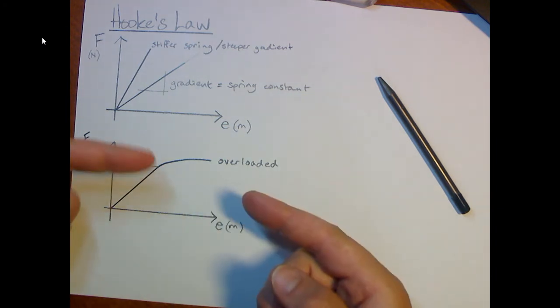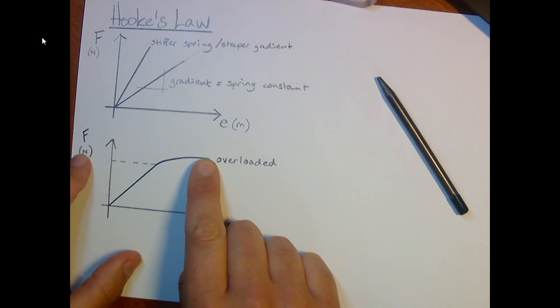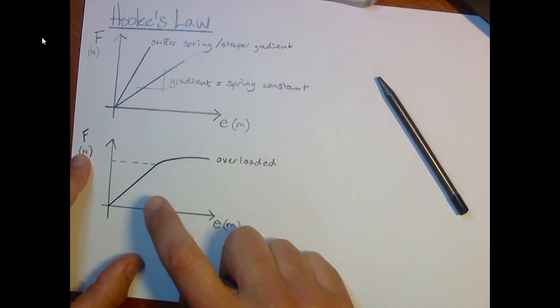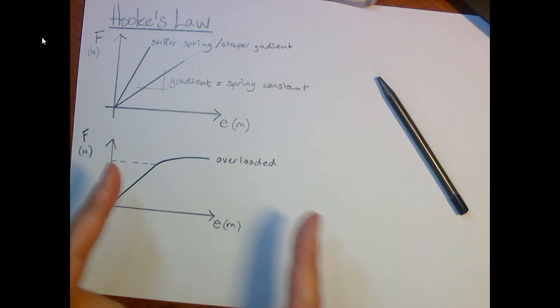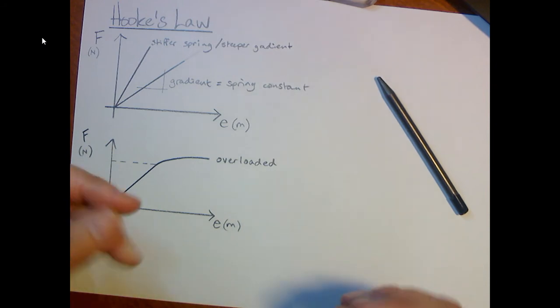Now, what would the spring look like? Well, when we unload the spring, we take the load off the spring, the spring would not go back to its original size and it would be permanently deformed. So it would be plastically deformed.